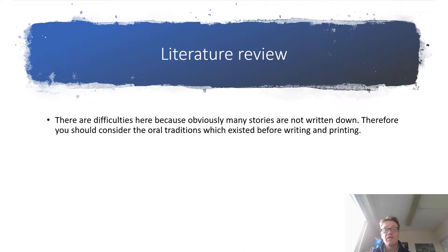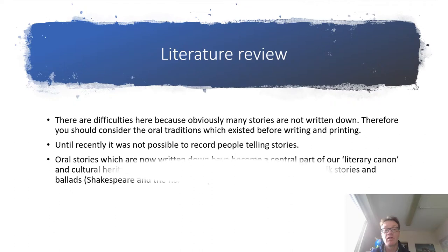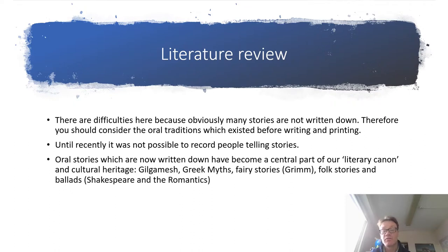For the literature review, there are obviously difficulties in that many stories are not written down, so you should consider the oral traditions which existed before writing and printing. It was not until quite recently that we could record people telling stories. Oral stories that have been written down have become a central part of our literary canon: Gilgamesh, Greek myths, fairy stories, folk stories and ballads. The Shakespearean Romantics use a lot of oral stories as their sources.